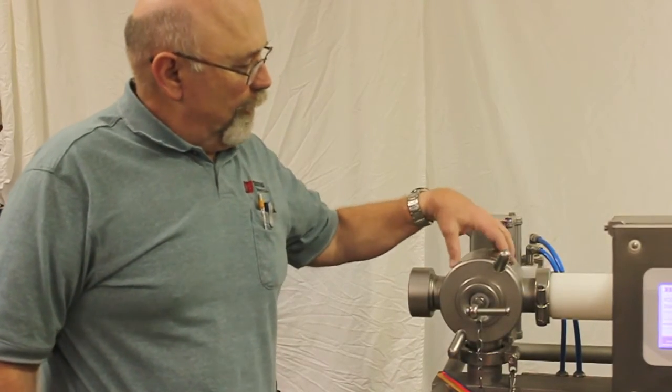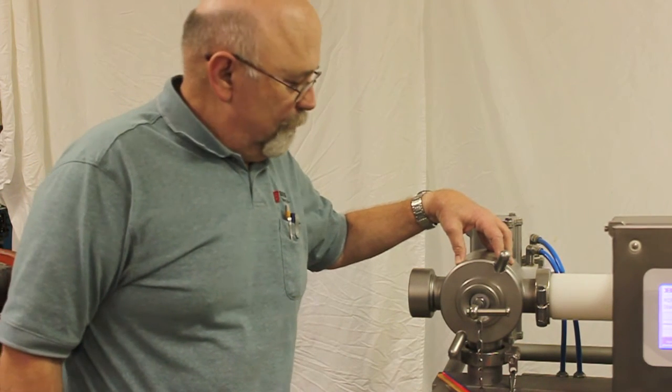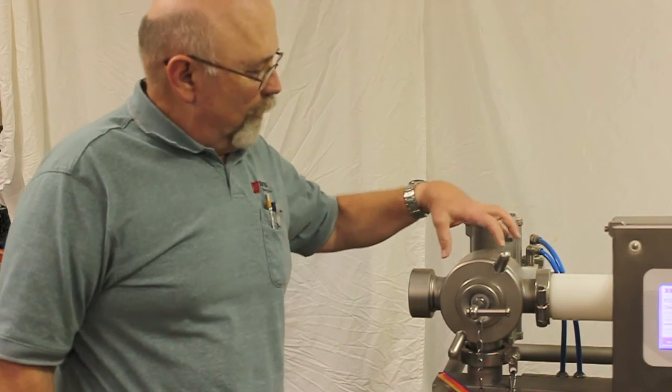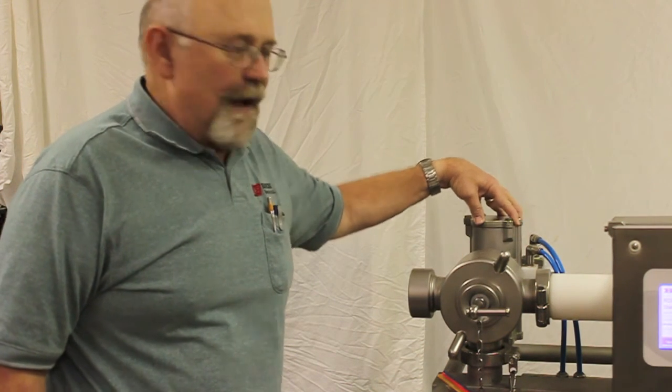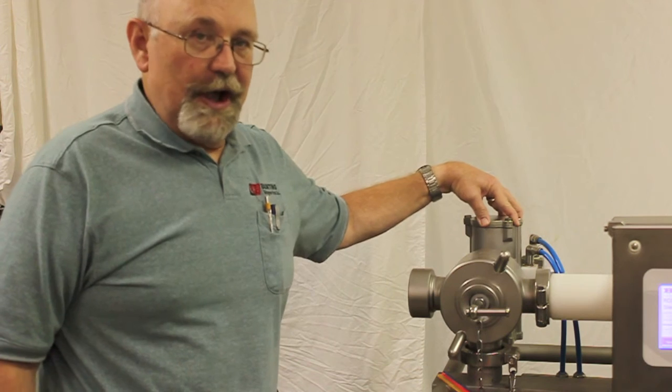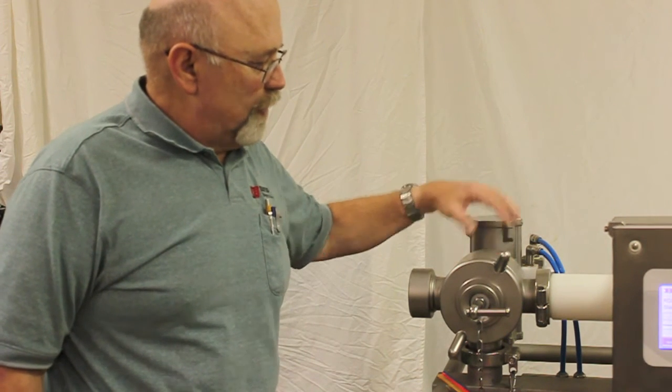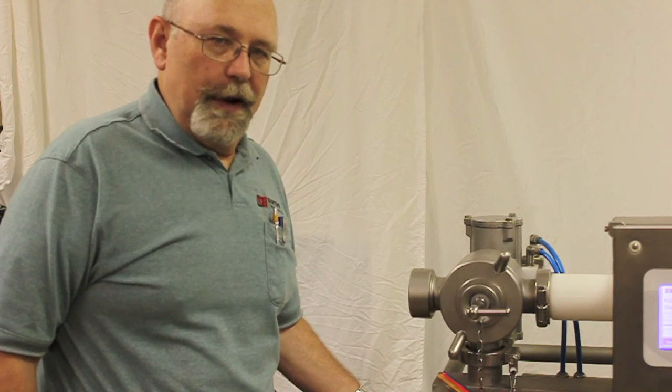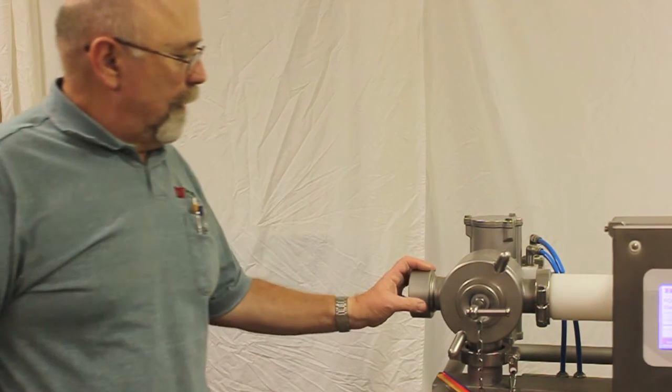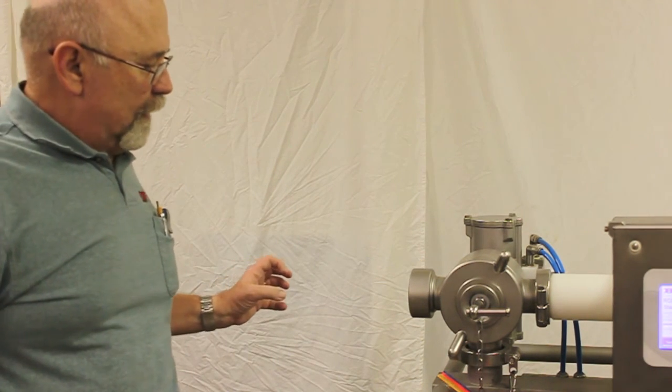This is the reject device of our meat line unit. It consists of the reject housing itself. There is a pneumatic valve in the back that actually changes the position of the reject valve, and then there is a reject bucket down here. The good material is coming out this side, just like this.